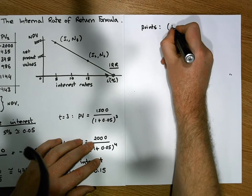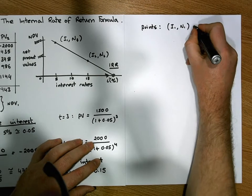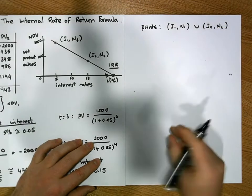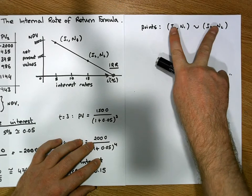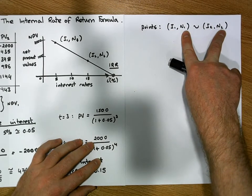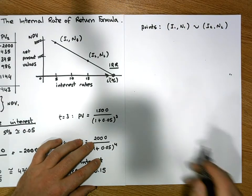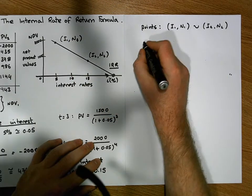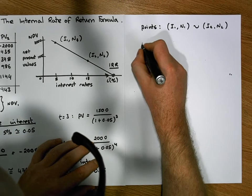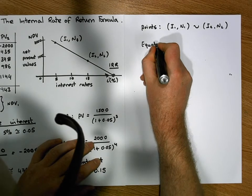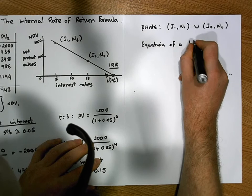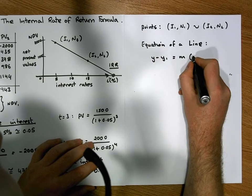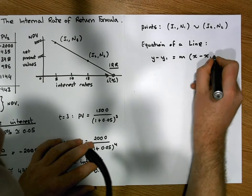Our two points are (i1, n1) and (i2, n2) — that is, we've done two net present value calculations at two different interest rates and arrived at two different net present values. We need to find the equation of this line. The general form of the equation of a line is: y minus y1 equals m times (x minus x1).